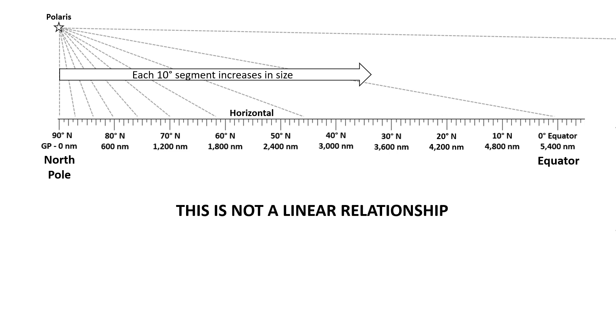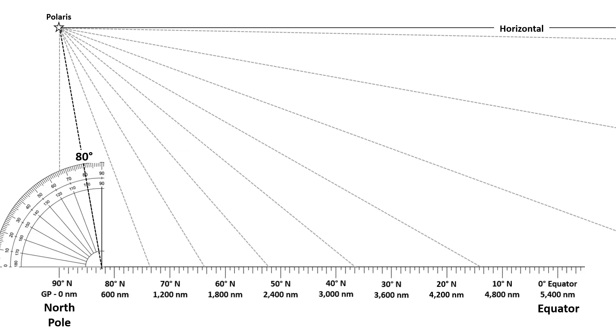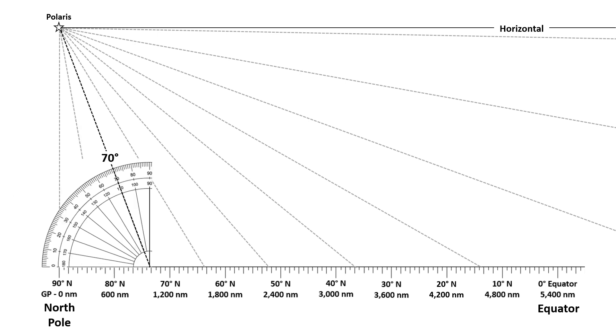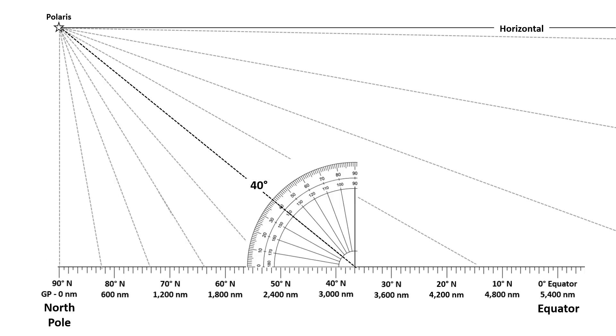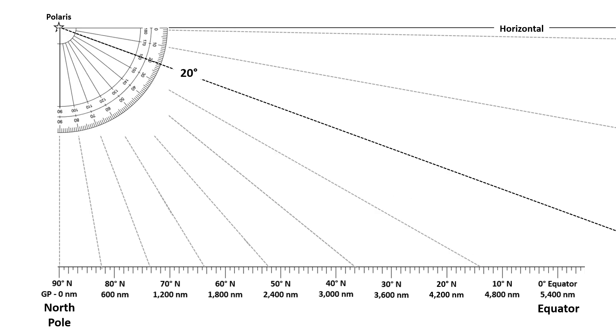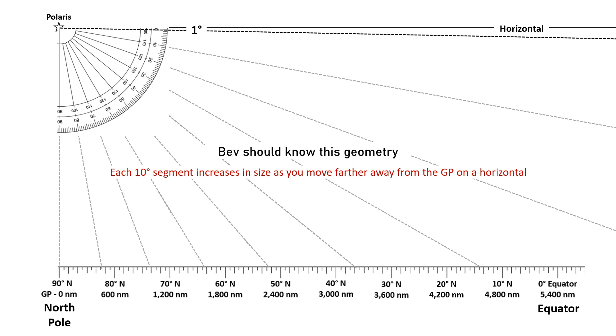Now you can change the altitude of Polaris to whatever you want, but it's not going to change the fact that this is not a linear relationship. And if you're going to use the excuse that those aren't measurements, but only calculations, then pull out a protractor and measure those angles. As you can see here, 80 degrees lines up, as does 70 degrees, 60, 50, 40, 30, 20, 10, and even one degree. So again, each 10-degree segment increases in size as you move farther away from the GP on a horizontal.